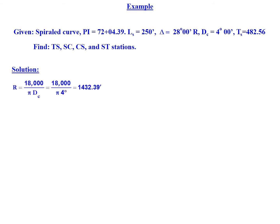To solve this we're going to start with the radius: 18,000 over Pi times 4 degrees will give us a radius of 1432.39 feet. We can find theta sub s by multiplying our length of spiral of 250 feet by the 4 degree curve divided by 200, which will give us a theta sub s of 5 degrees.